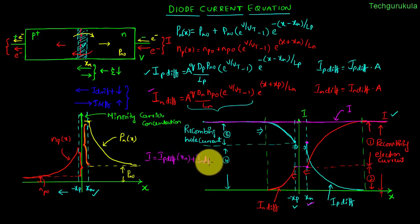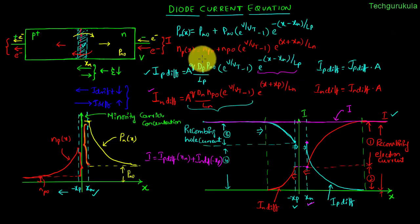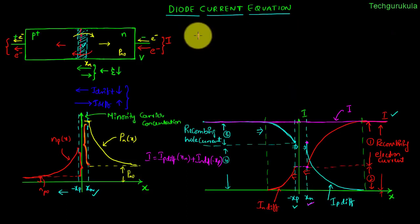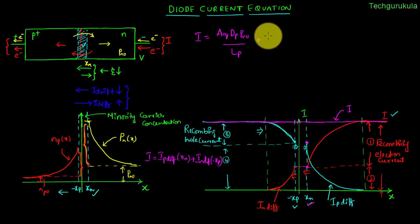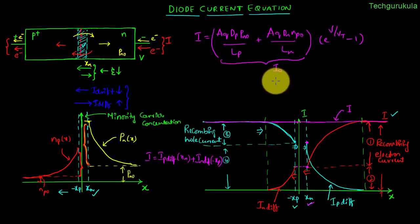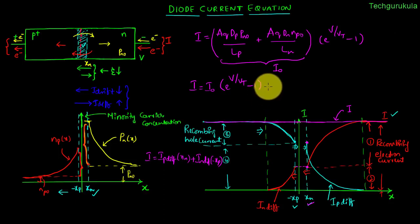Substituting x_n into the I_p,diff equation, the exponential becomes 1, leaving only the leading coefficient. Substituting x = −x_p into the I_n,diff equation, the exponential also becomes 1, leaving just that coefficient. Now adding these two quantities, the total current flowing through the diode is: I = (A·q·D_p·p_n0/L_p + A·q·D_n·n_p0/L_n)·(e^(v/V_T) − 1). We call this constant I_0, the reverse saturation current.